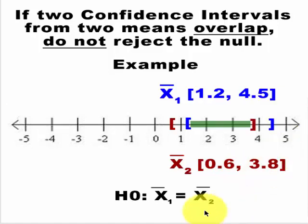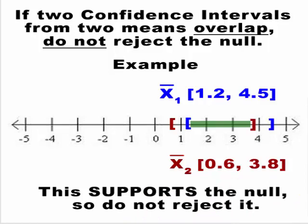And that's what the null hypothesis states: that the mean from the first group is going to equal the mean from the second group. That supports the null, so you cannot reject it.